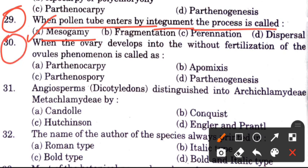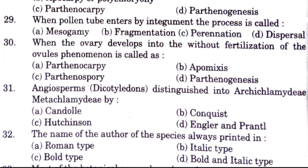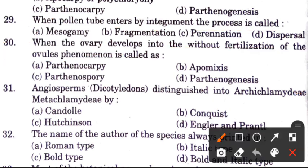Question 30: When the ovary develops into a fruit without fertilization of the ovule, this process is called — options are parthenocarpy, apomixis, parthenospory, and parthenogenesis. The answer is A, parthenocarpy.